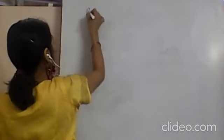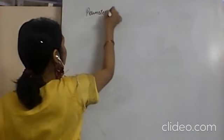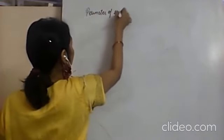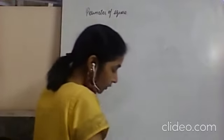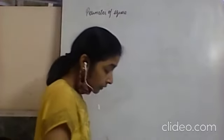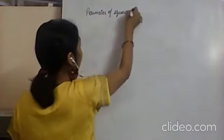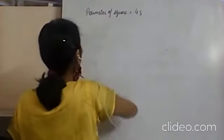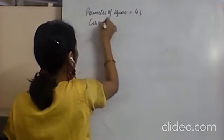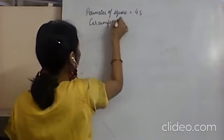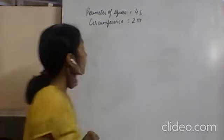The perimeter of a square equals 4 times the side. And the circumference of the circle equals 2πr.